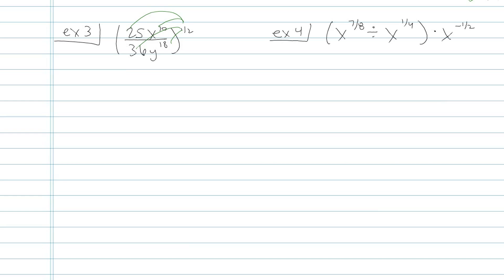If I have twenty-five to the one-half power, that's going to be five. x to the ten times one-half is going to be x to the fifth. There's my top. Now let's look at the bottom. I have thirty-six to the one-half power, which of course is just square root of thirty-six, which is six. And then I have y to the eighteen times one-half, so that's y to the ninth. This is my final answer there. There's nothing that could be simplified any further. I don't have any negative exponents, so I'm done.